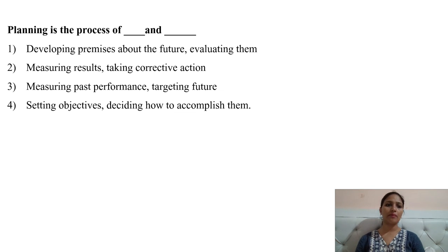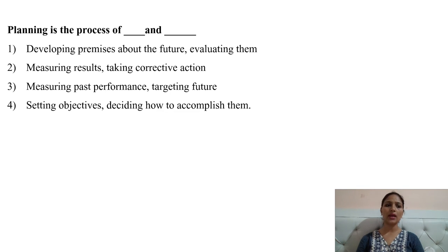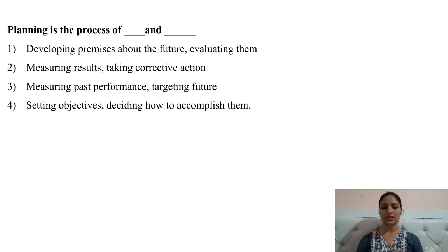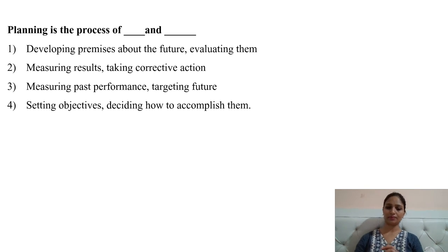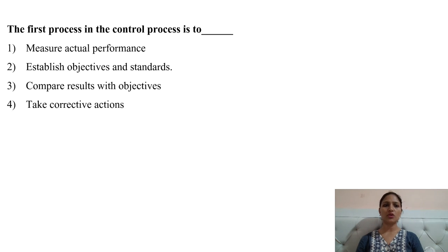Next question: planning is the process of blank and blank. The right answer is: planning is the process of setting objectives and deciding how to accomplish them. Option number four would be the right answer here.